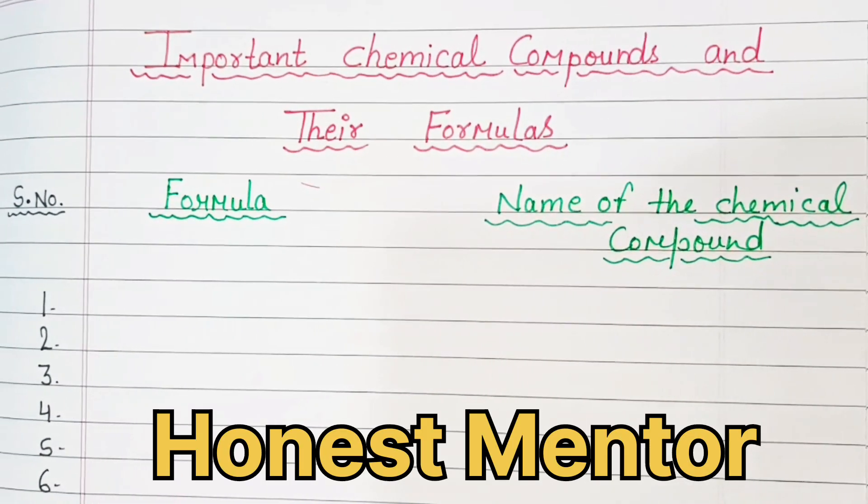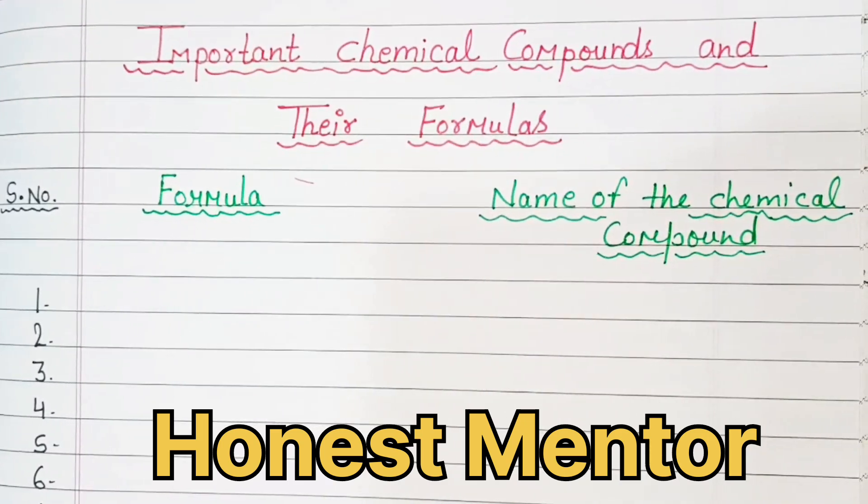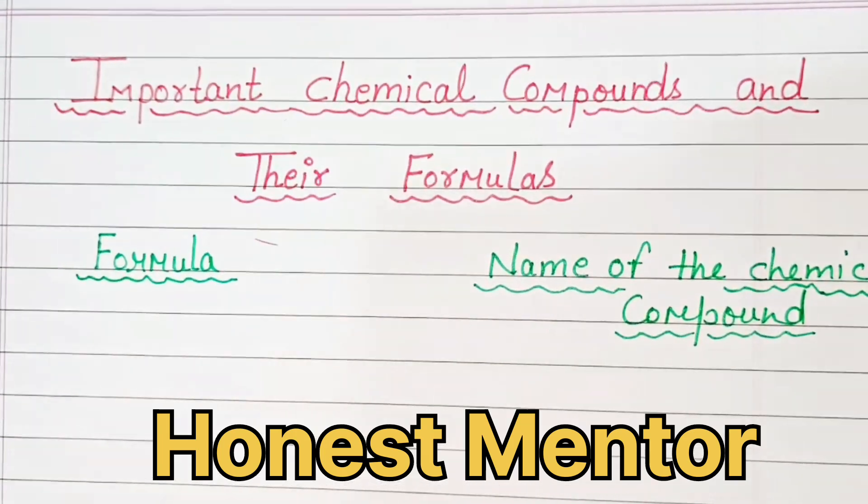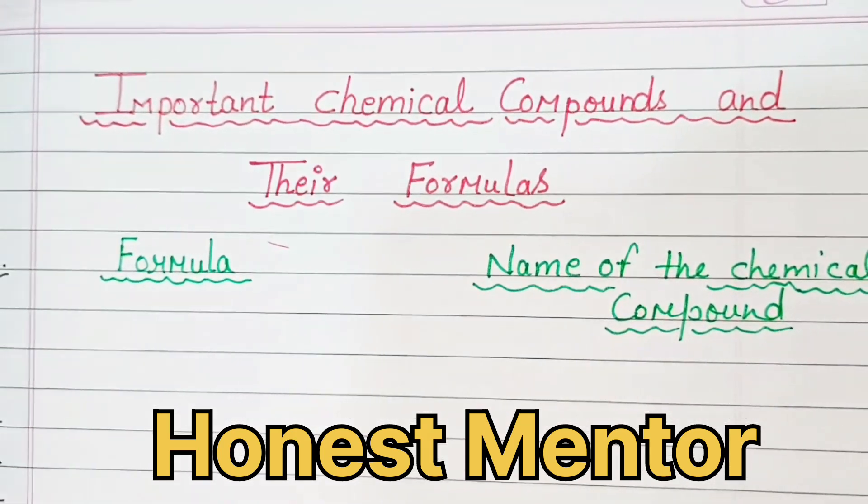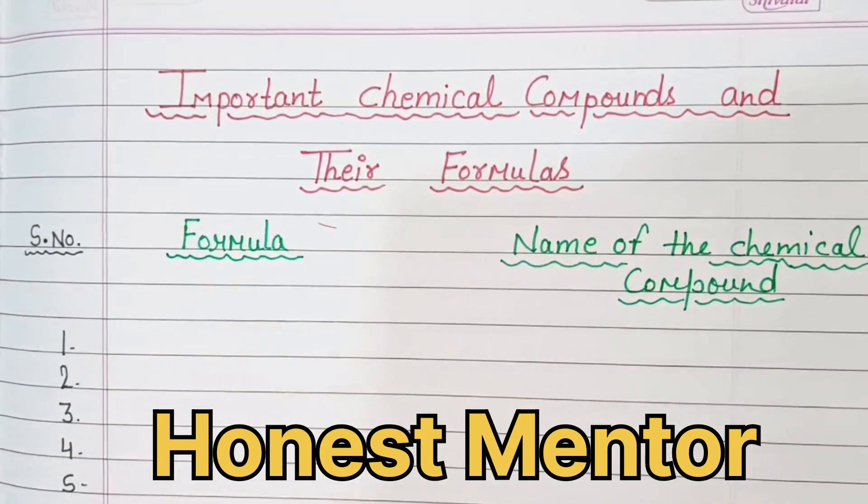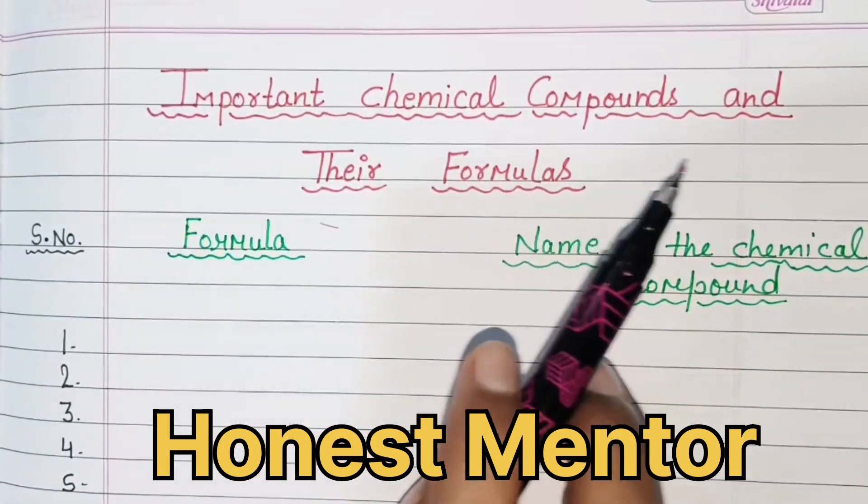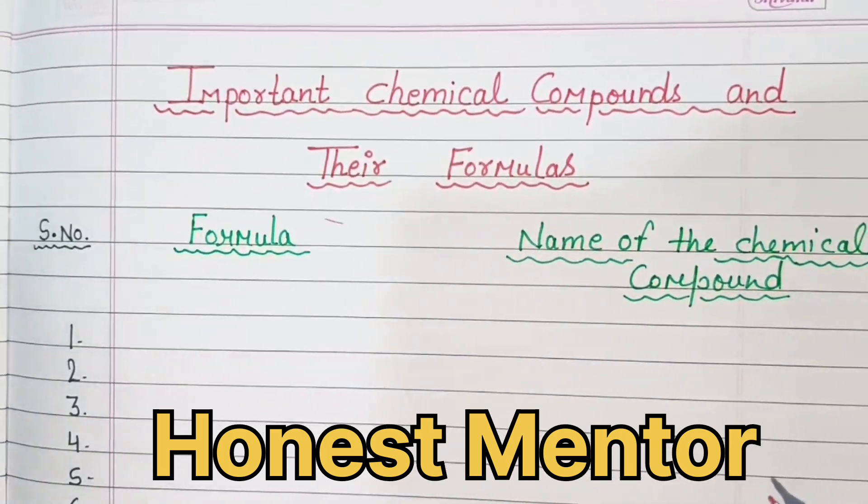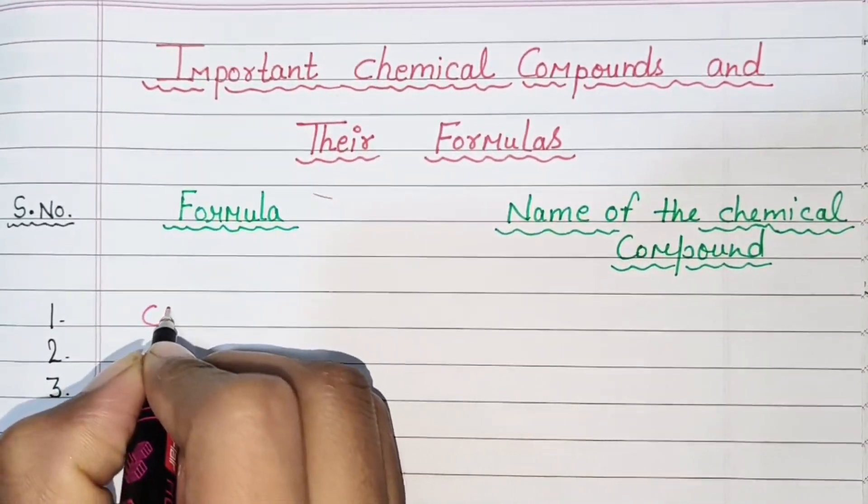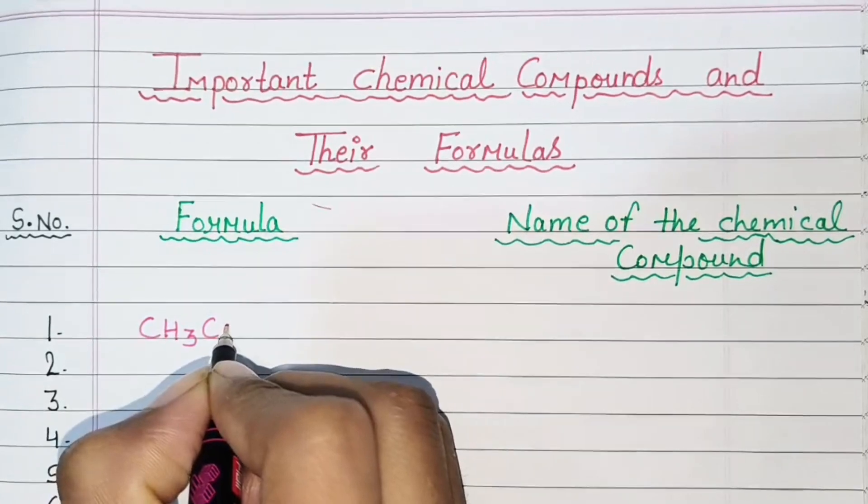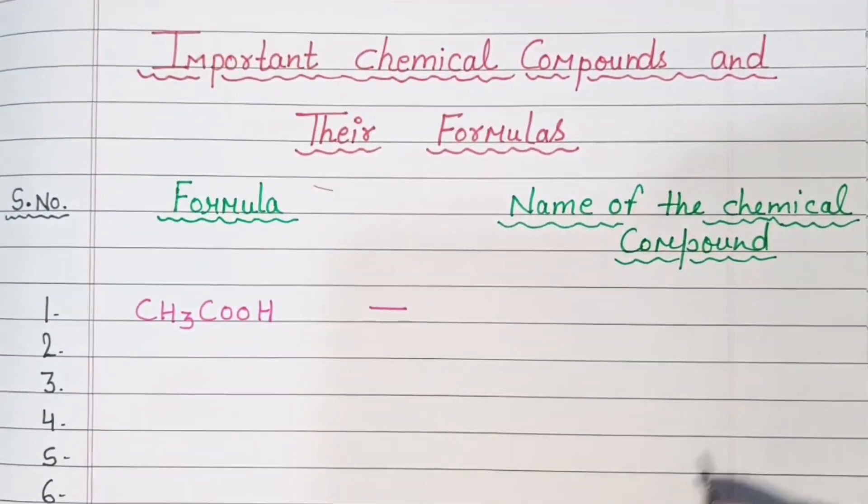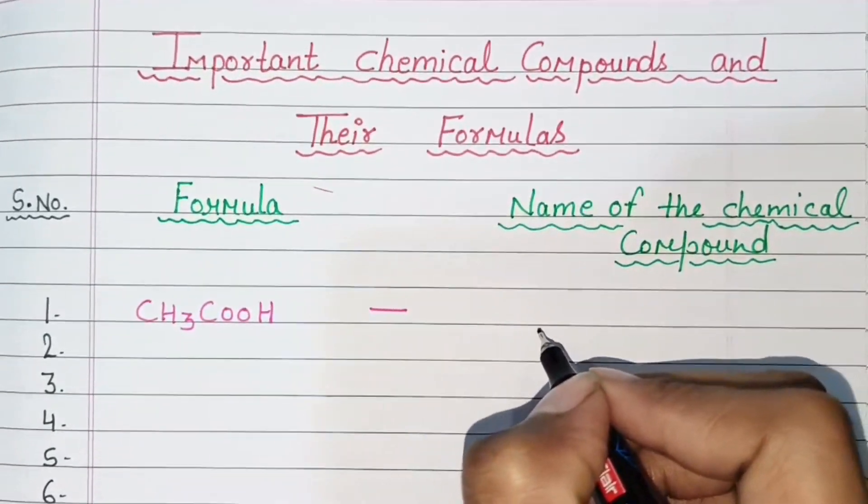Hello everyone, welcome to my channel Honest Mentor. Today we are going to learn about important chemical compounds and their formulas. Let's start. Important chemical compounds and their formulas. Formula, name of the chemical compounds. First, C2H3COOH, chemical compound acetic acid.